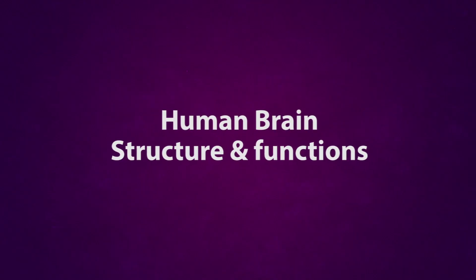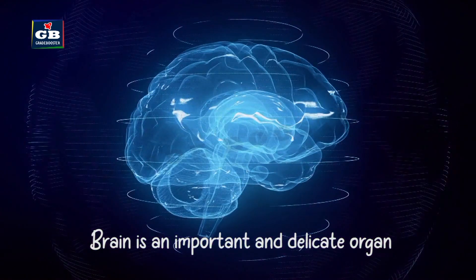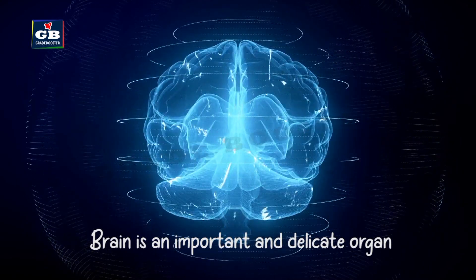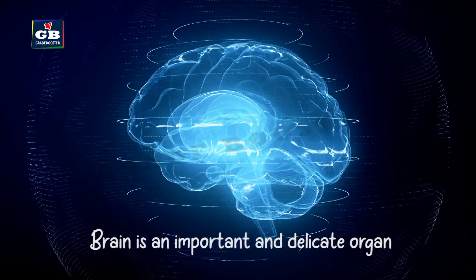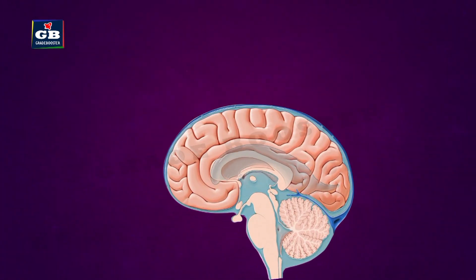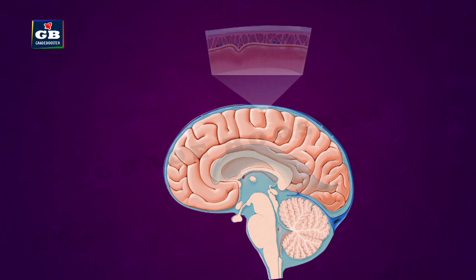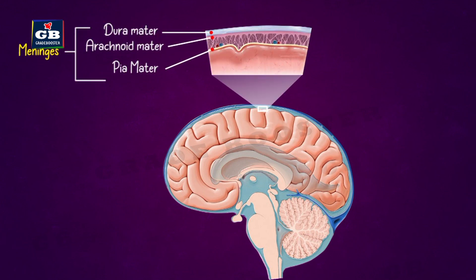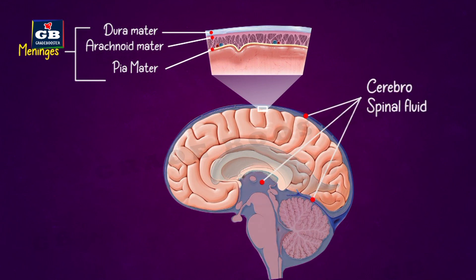The human brain is an important and delicate organ, so it has to be protected well. The brain is covered by a fluid-filled, balloon-like structure made up of three layers called meninges. The fluid present between these layers is called cerebrospinal fluid. These layers and the fluid protect the brain from shocks and injuries.